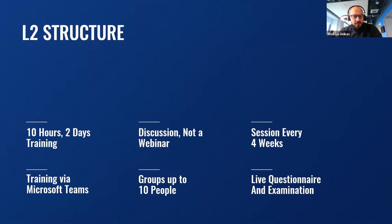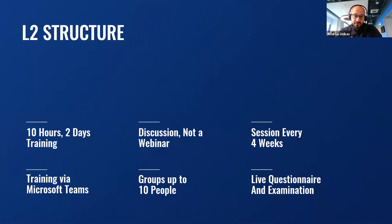The structure of Level 2 training is very similar to Level 1 training. The difference is that it will take 10 hours instead of 12 hours, and it will be divided into 2 days instead of 3 days. This mirrors the sales training structure — in Level 1 technical training we had 3 days and 12 hours, while in sales training Level 1 we have 10 hours and 2 days. You can see the similarities in the structure.